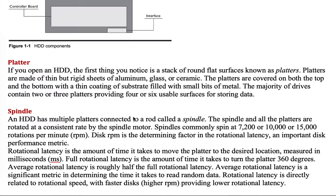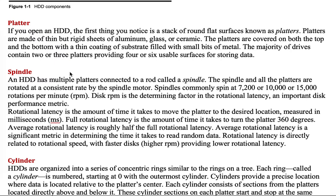The spindle is in the middle, and the platters are connected to a rod called the spindle, which rotates at a consistent rate driven by the spindle motor. Spindles commonly spin at 7,200 RPM, though 5,400 RPM is also common — these are more typical in personal computers. In data centers, drives spin at 10,000 or 15,000 RPM. RPM is the determining factor in rotational latency, which is an important disk performance metric.